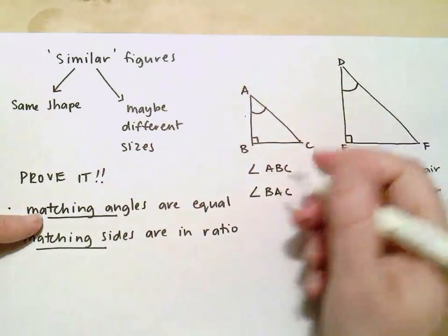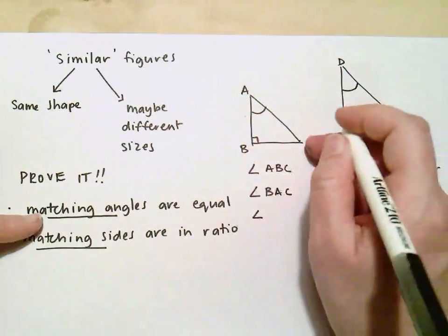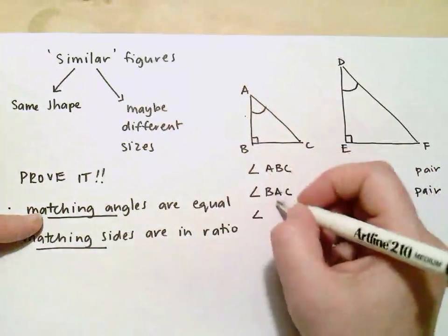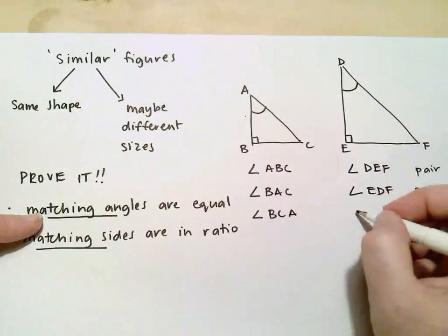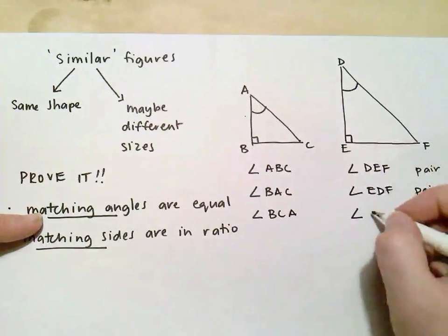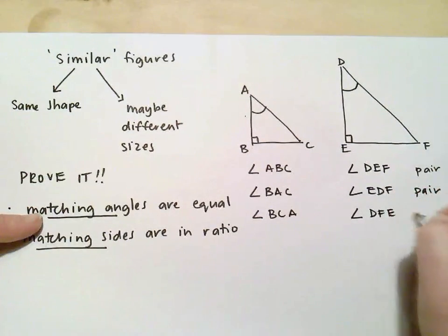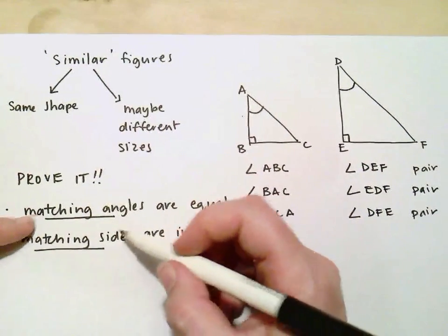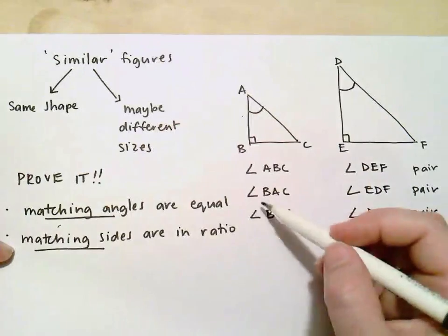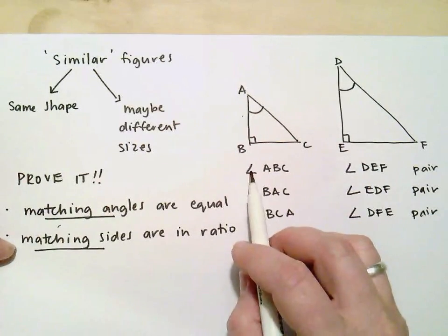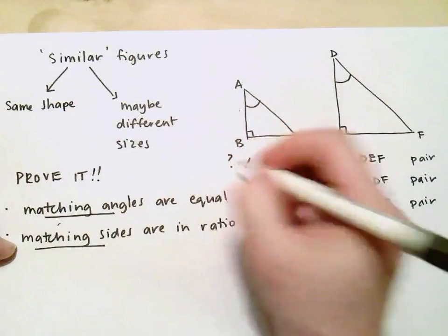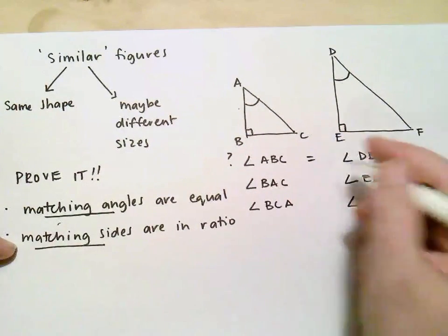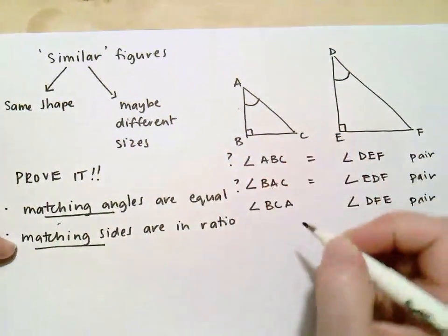And then finally these other angles. So angle BCA or ACB. It doesn't matter which way I say it. As long as the C is in the middle. And angle DFE. They form a pair. So I've got to ask myself, are those matching angles all equal? So does angle ABC equal angle DEF? Does angle BAC equal angle EDF? And so on.